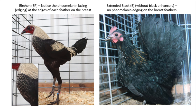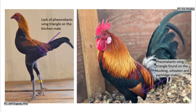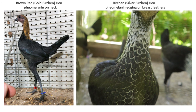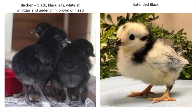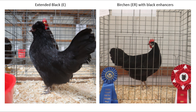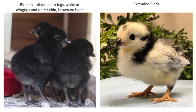One main difference between Extended Black and Birchen is that Birchen-based birds have very fine lacing on the ends of their feathers. Birchen males are similar to Duckwing, Wheaten, and Partridge males, except that Birchen males lack the wing triangle of phaeomelanin, giving them the name crowwing. Females have silver or gold on their neck feathers as well as lacing into their breast. Birchen chicks tend to be much darker but usually have a bit of yellow fluff under their chin and a tiny amount at the end of their wings.